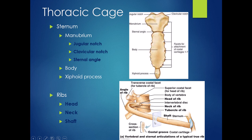When we look at the ribs, we want to be able to say whether it's a true rib, false rib, or floating rib, and also identify the head, neck, and shaft of the rib. The head is where it connects to the costal facets on the vertebra. The neck is the skinnier portion that leads into the shaft, where it will then connect with some costal cartilage in order to go to the sternum.